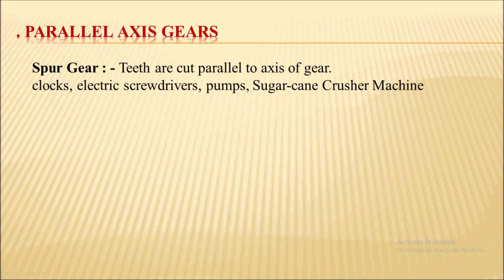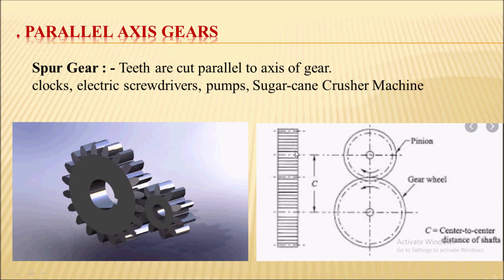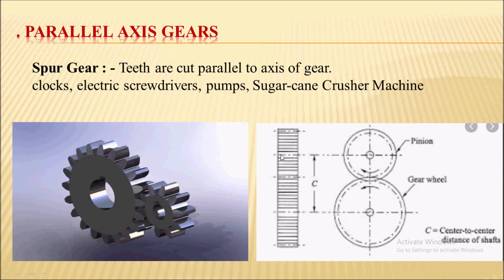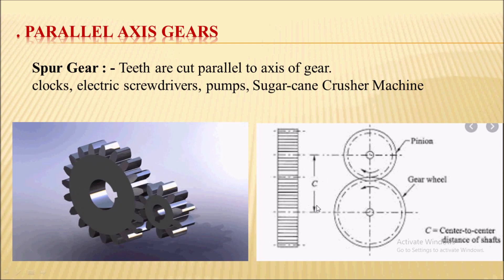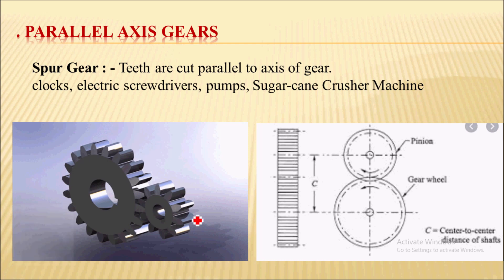The first parallel axis gear is the spur gear. To transmit power between two parallel axis shafts, spur gear can be used. The teeth of the spur gear are cut straight, parallel to the axis of the gear. These spur gears are simple in construction and easy to manufacture, making them the most commonly used gear. Regarding tooth engagement, the engagement is sudden, resulting in a sudden line contact between the teeth, which causes noisy operation.